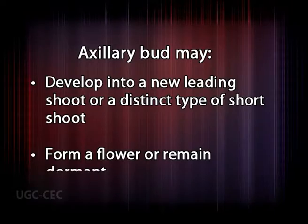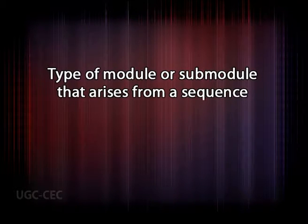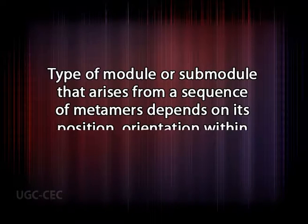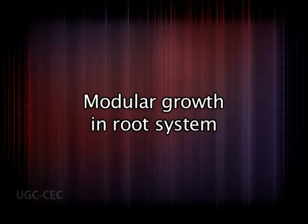All buds in the growth unit or module are not equivalent — axillary buds are of unequal size and potentialities. Their unequal potentialities for growth lead to different branching patterns of the shoot system. An axillary bud may develop into a new leading shoot, a distinct type of short shoot, a flower, or remain dormant. Module growth continues only as long as the apical meristem is active, but cessation of this activity may provide a stimulus for an axillary bud to become active, bringing about branching of the module.